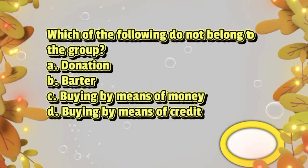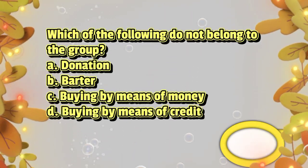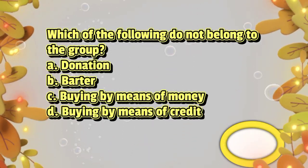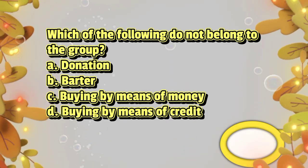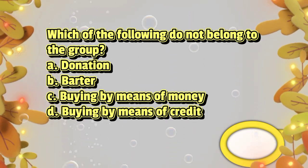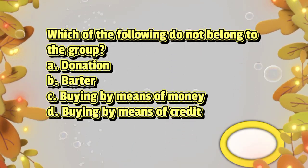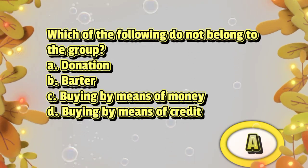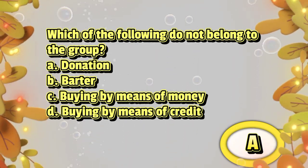Which of the following does not belong to the group? A. Donation, B. Barter, C. Buying by means of money, D. Buying by means of credit. The answer is letter A.